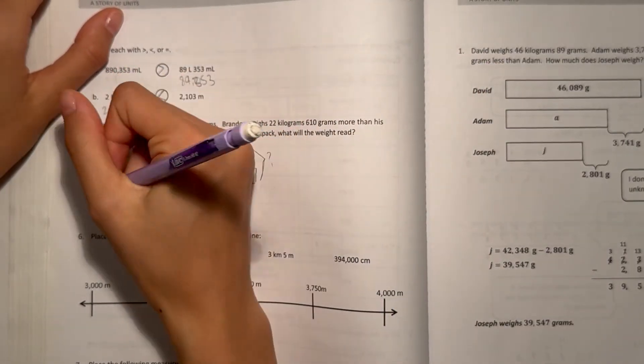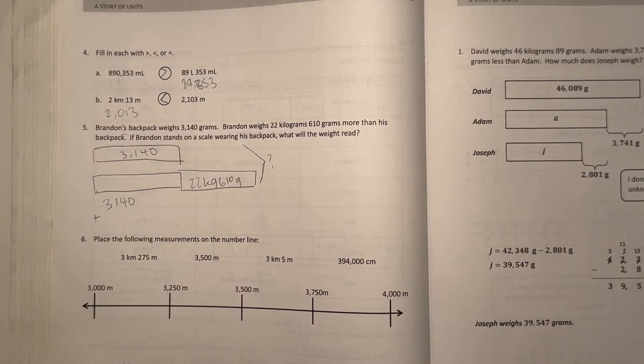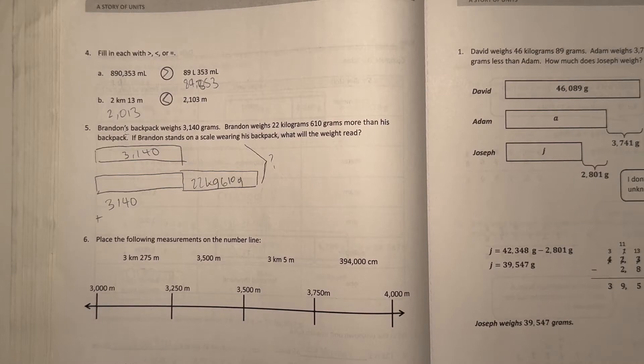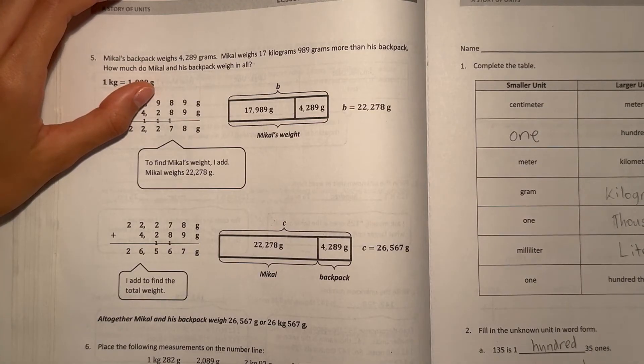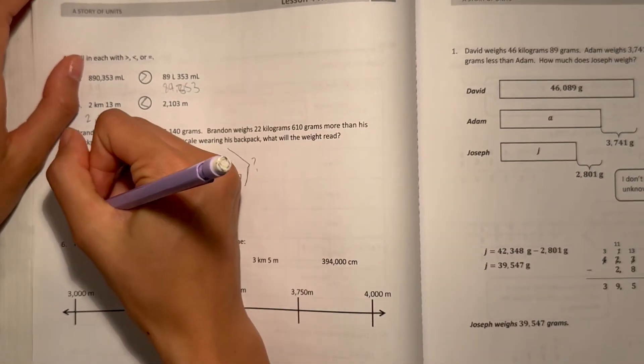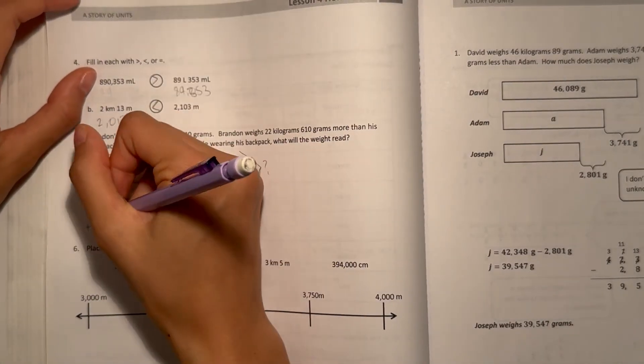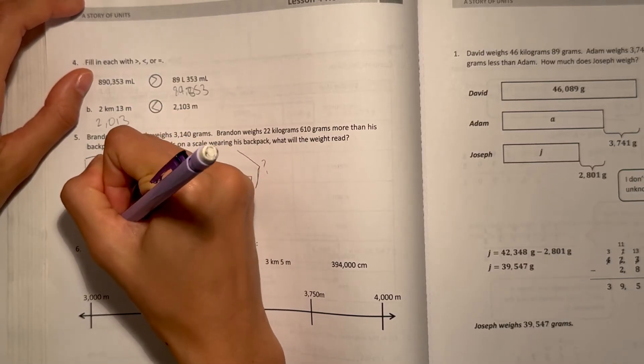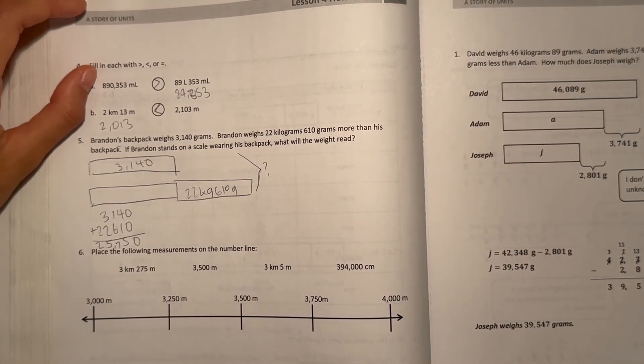Well, let's do our math. So 3,140 plus, we're going to first find out how much Brandon weighs. 22 kilograms, 610 grams. If we look back at our chart here, kilograms to grams, there's 1,000 grams in a kilogram. So 22 kilograms to grams would be 22,000. And then 610 grams is already in grams form. Let's write 610. We have 0, 5, 7, 5, 2, 25,750 grams. So that's how much Brandon weighs.